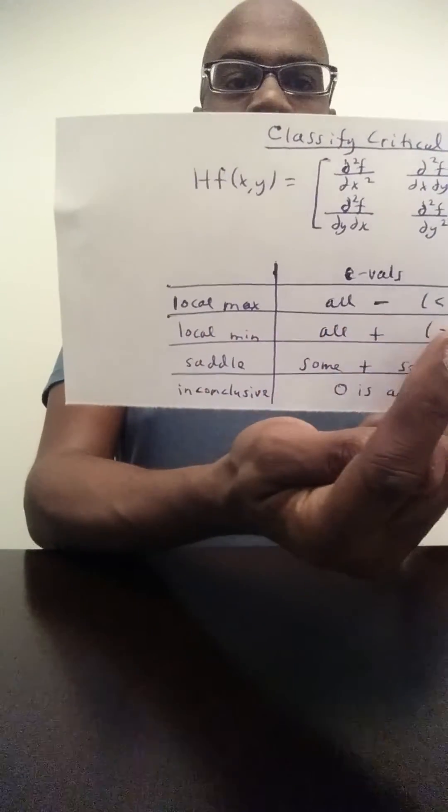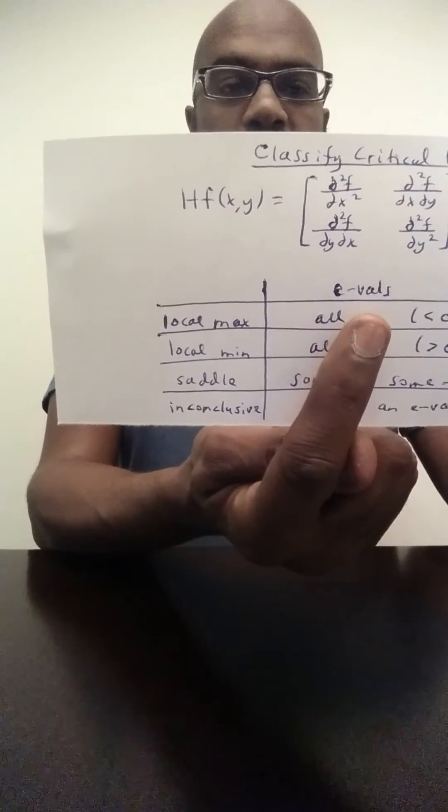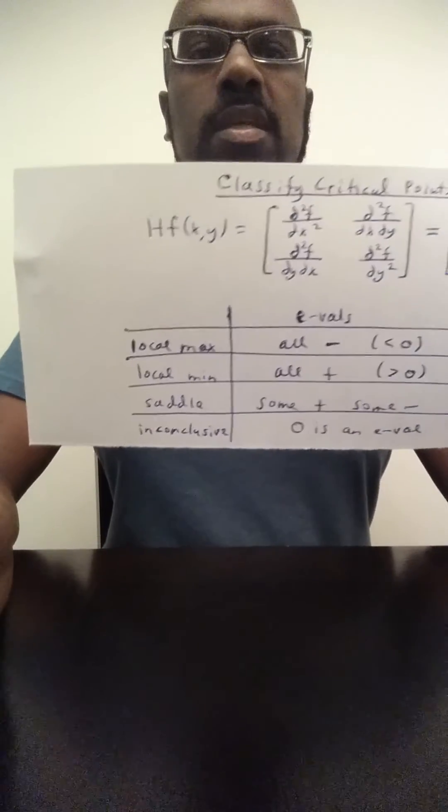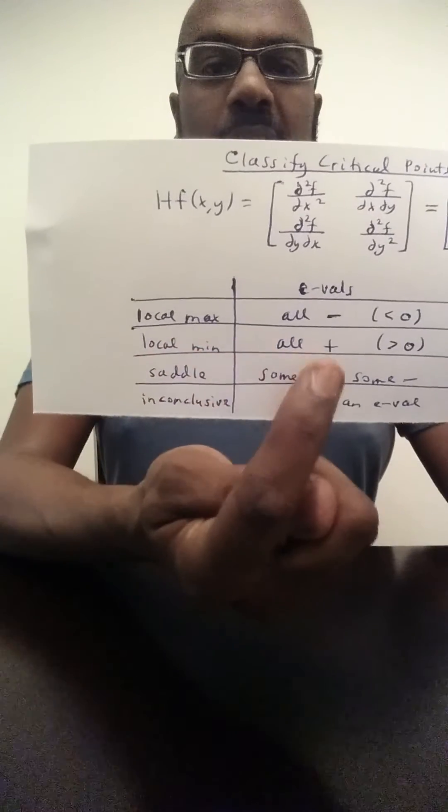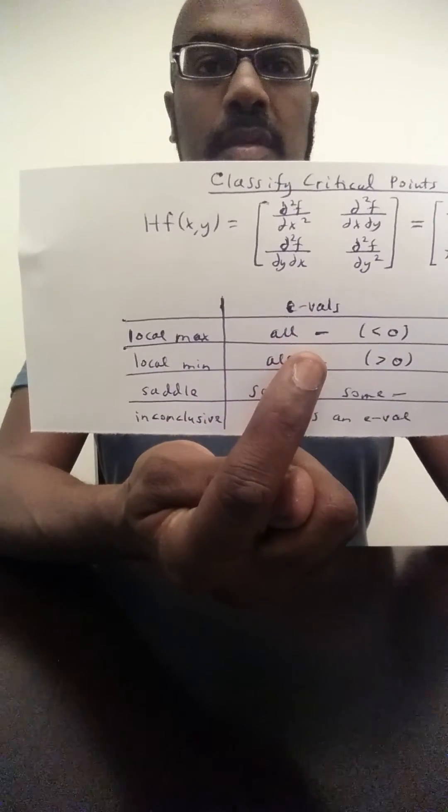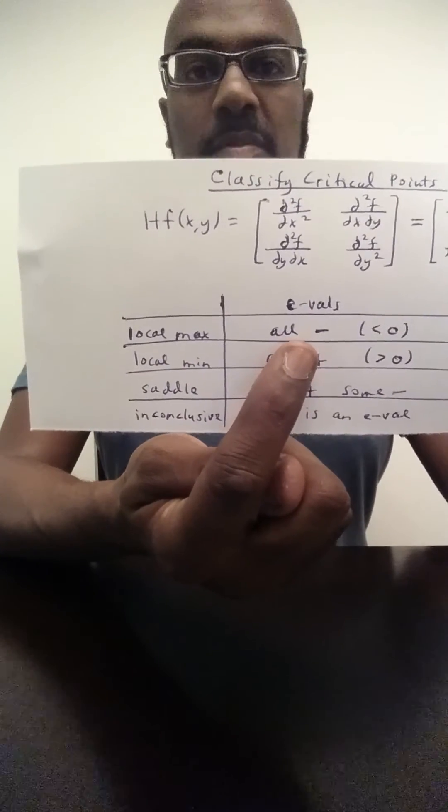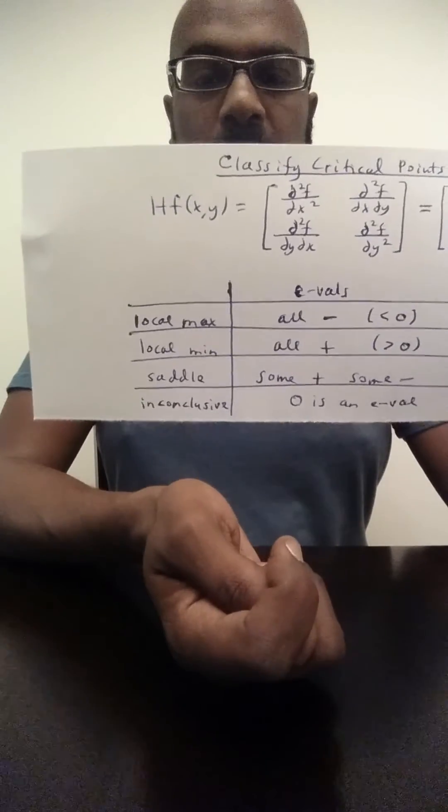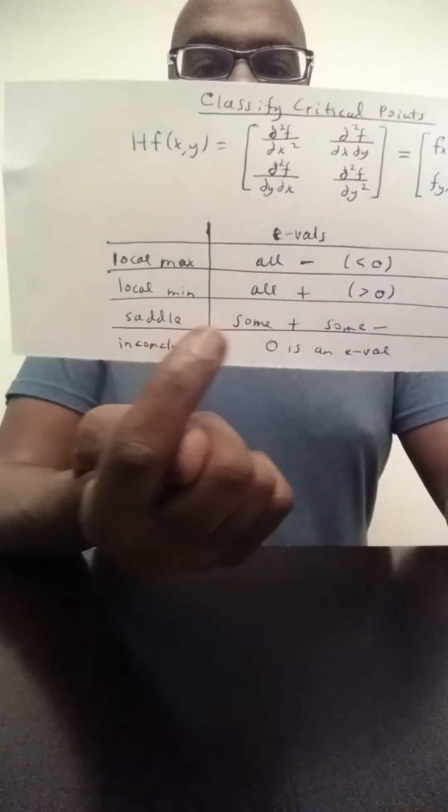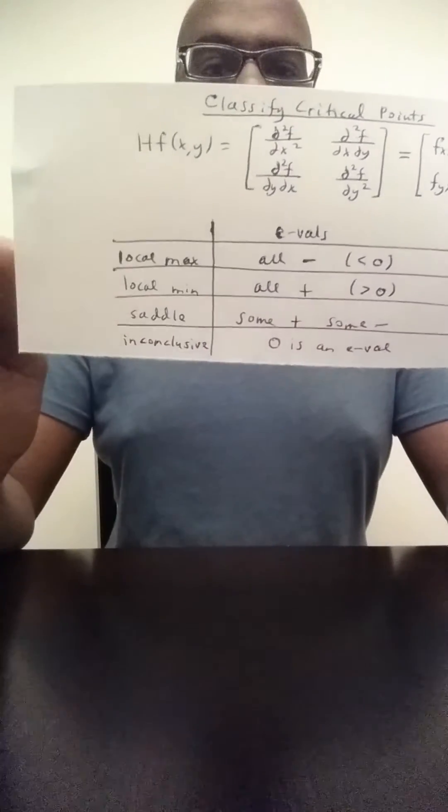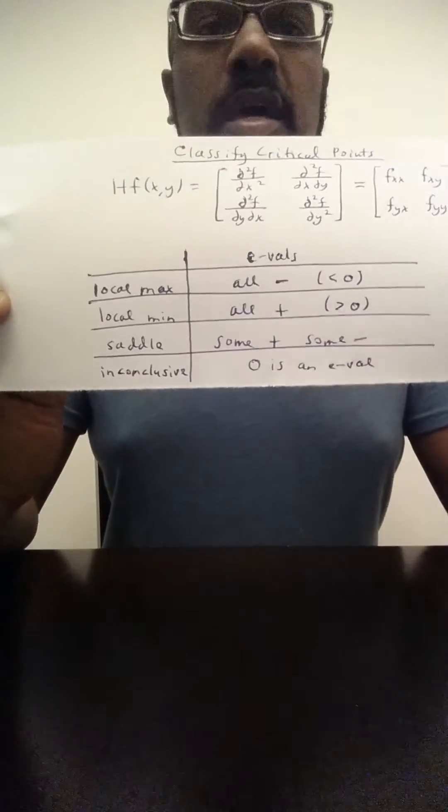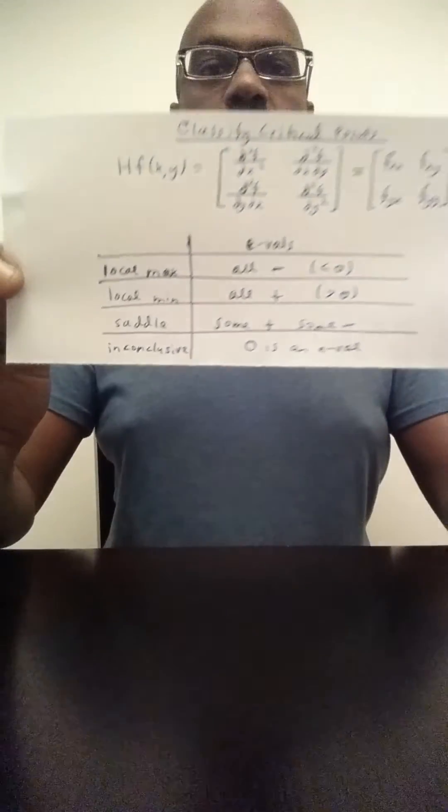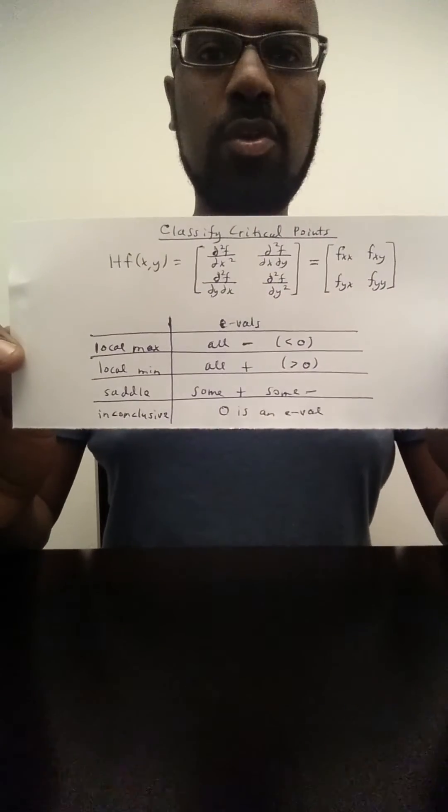Okay, so recall that in single variable calculus a point is a maximum if the second derivative is negative. Here we'll have a local max if all the eigenvalues are negative of the Hessian at the given point. Similarly we have a local min when all the eigenvalues are positive. The analogy in single variable calculus is the second derivative is positive will give us a local min. We'll have a saddle point if we have a mix of positive and negative eigenvalues, and as soon as you have zero as an eigenvalue the second derivative test is inconclusive in determining what kind of critical point you have.